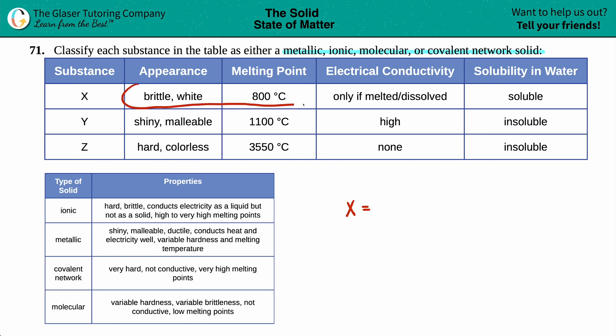Now here is all of substance X's physical properties. Appearance is brittle and white, so it could be chalky kind of brittle - it could break when you touch it and has a white appearance. Melting point, 800 degrees Celsius. If I compare the three of these, it seems like 800 degrees Celsius is roughly the lowest one out of the bunch. We got 1100 and 3550 degrees Celsius. So this melting point is roughly low.